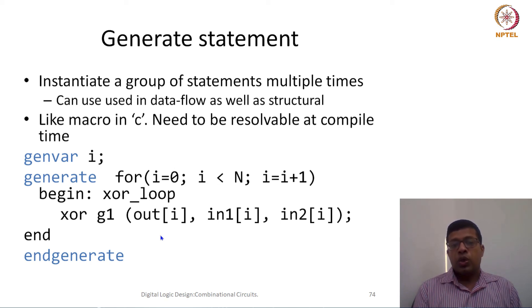For example, in this example what I want to create is I want to create an N input XOR gate. Because in each XOR gate I am saying that out[i] and input1[i], input2[i]. That means there would be N number of such gates would be generated, and N has to be a constant, a fixed constant, so that I can do compile time analysis.